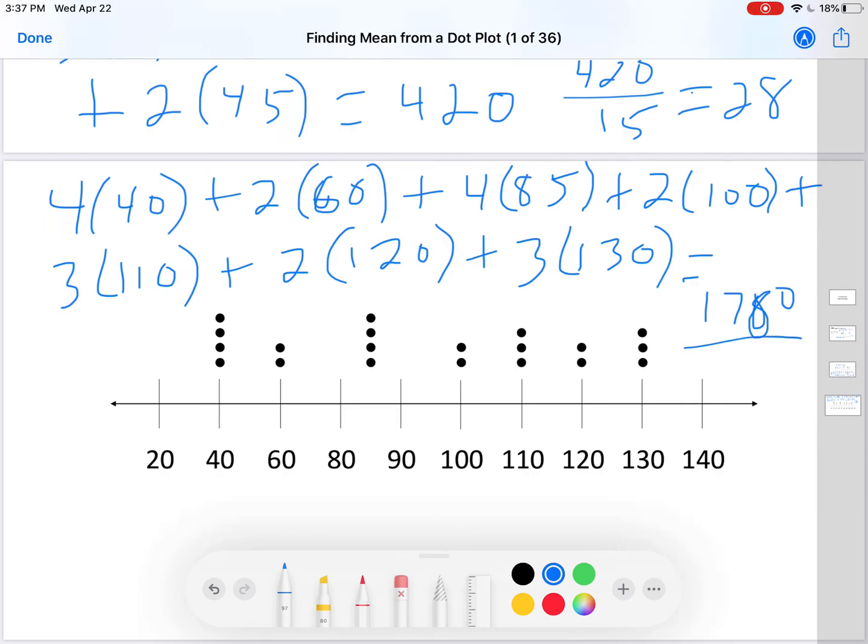Now we have to divide that by the count. 1, 2, 3, 4, 5, 6, 7, 8, 9, 10, 11, 12, 13, 14, 15, 16, 17, 18, 19, 20. 1780 divided by 20 is 89. That means the mean is 89.